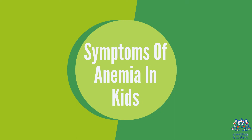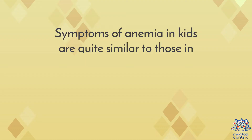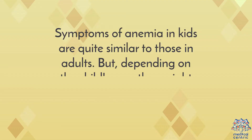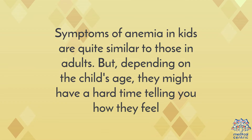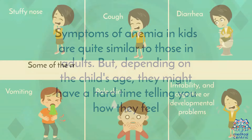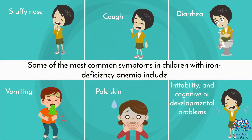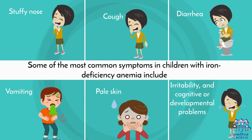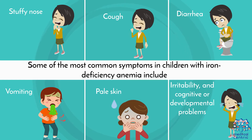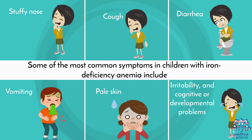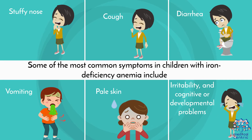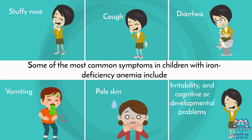Symptoms of Anemia in Kids. Symptoms of anemia in kids are quite similar to those in adults, but depending on the child's age, they may have a hard time telling you how they feel. Some of the most common symptoms in children with iron deficiency anemia include stuffy nose, cough, diarrhea, vomiting, pale skin, irritability, and cognitive or developmental problems, among others.